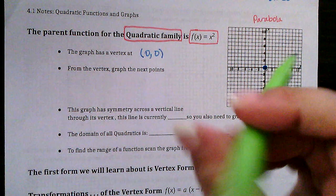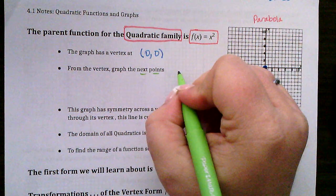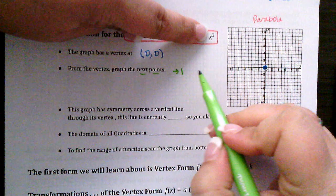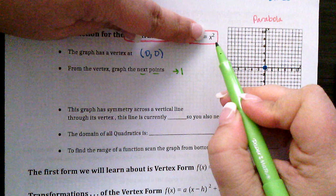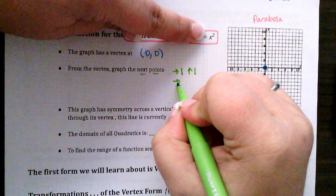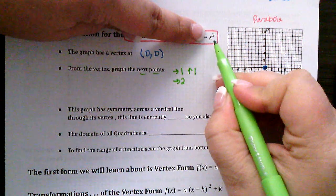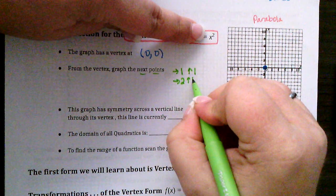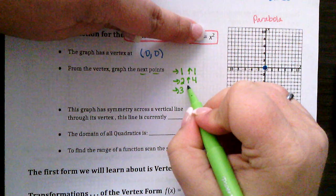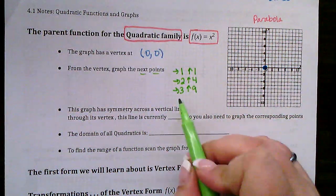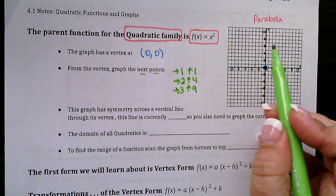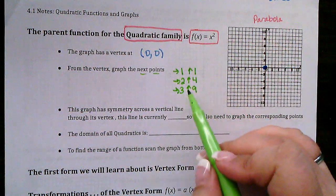From there, we graph the next points by substituting values into our function. If I sub in 1, 1 squared is 1. If I sub in 2, 2 squared is 4. If I sub in 3, 3 squared is 9. And if I sub in 4, 4 squared gives me 16. My graph only goes to 10, so I'm not going to go past 3.